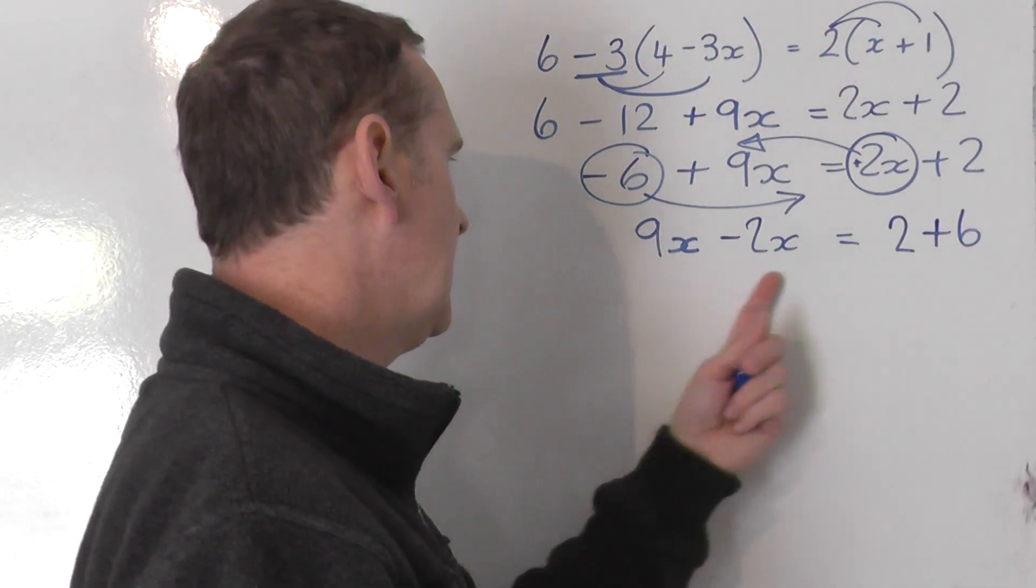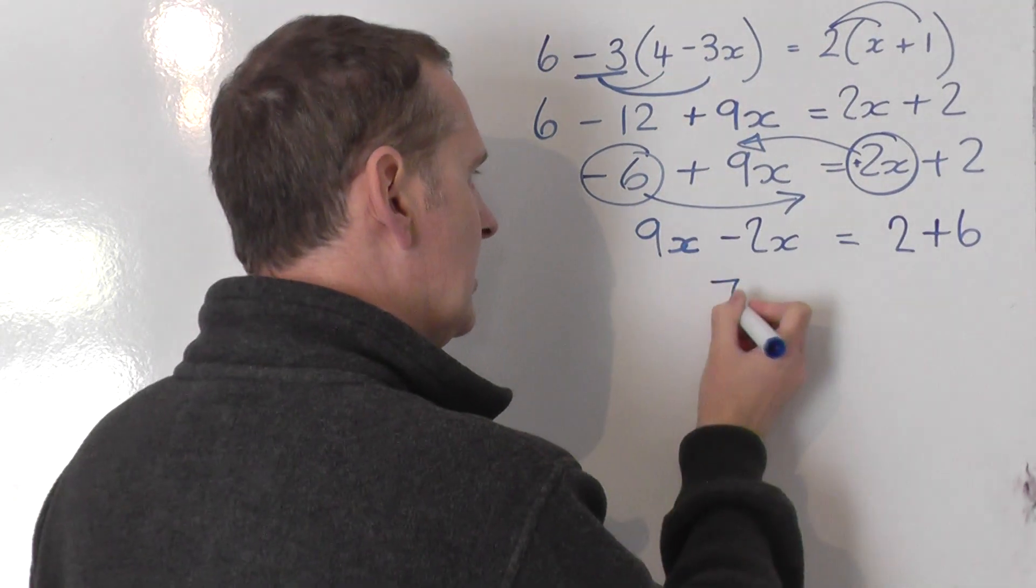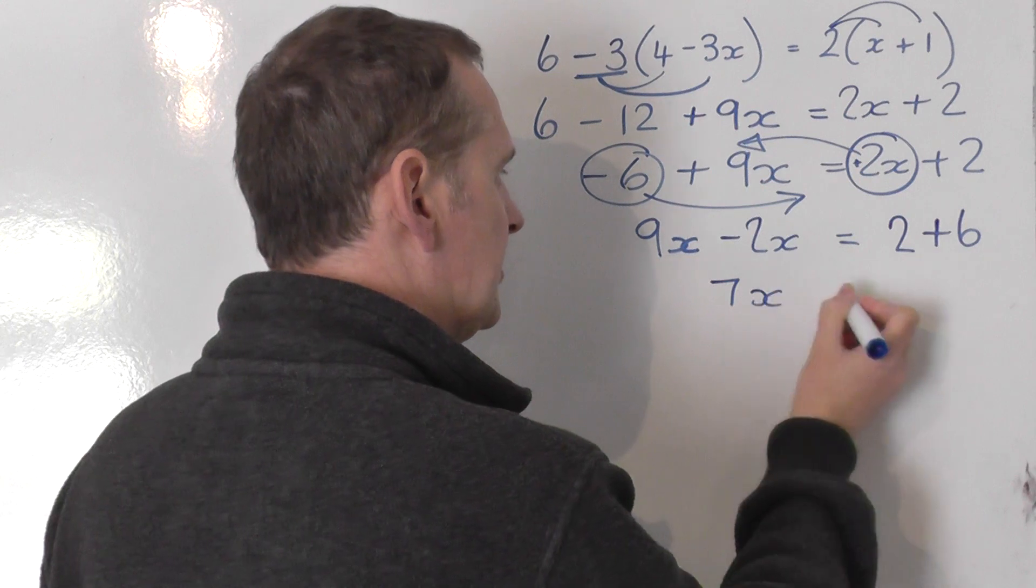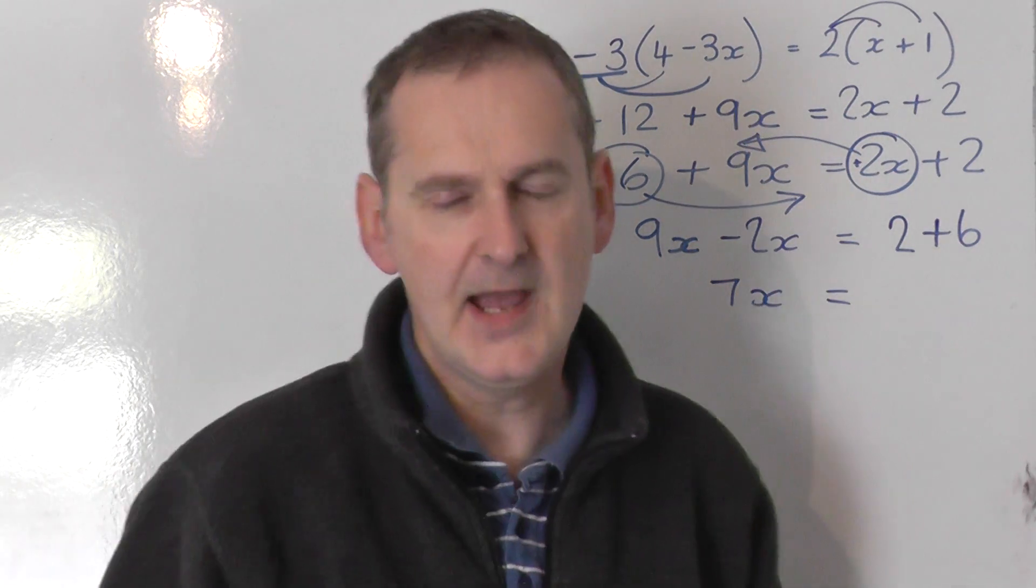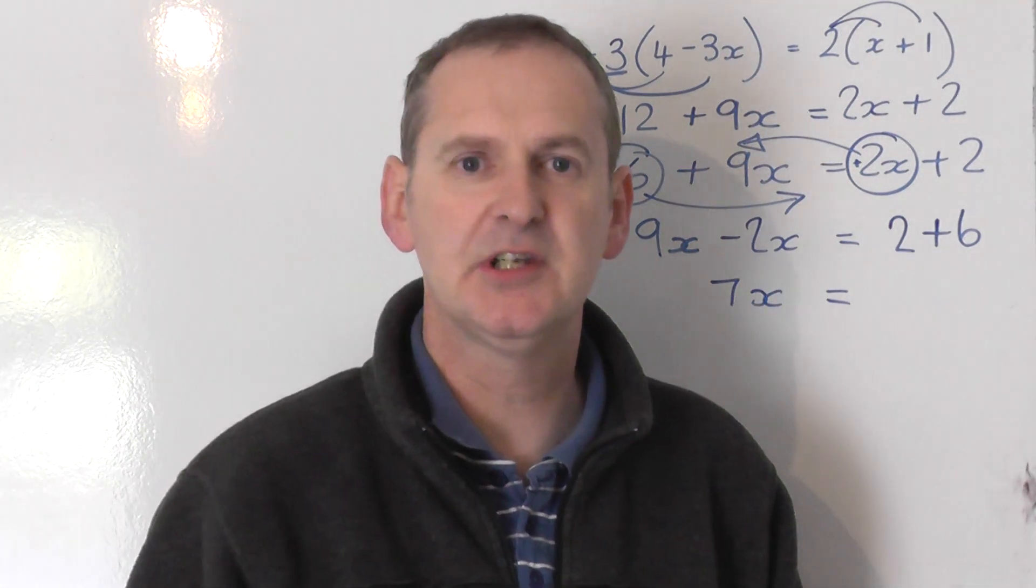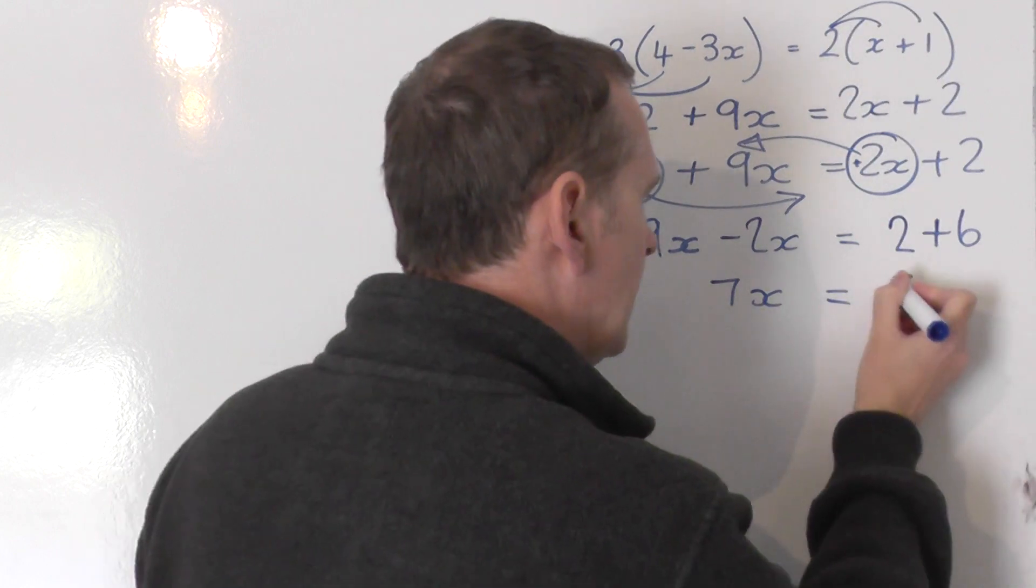So on the left hand side now I tidy up. 9x takes away 2x gives 7x. And on the right hand side I've got 2 plus 6. Simplify that and you get 8.